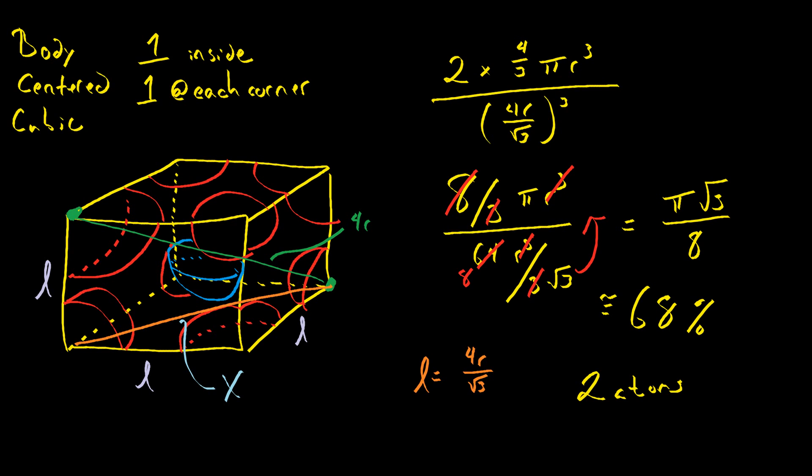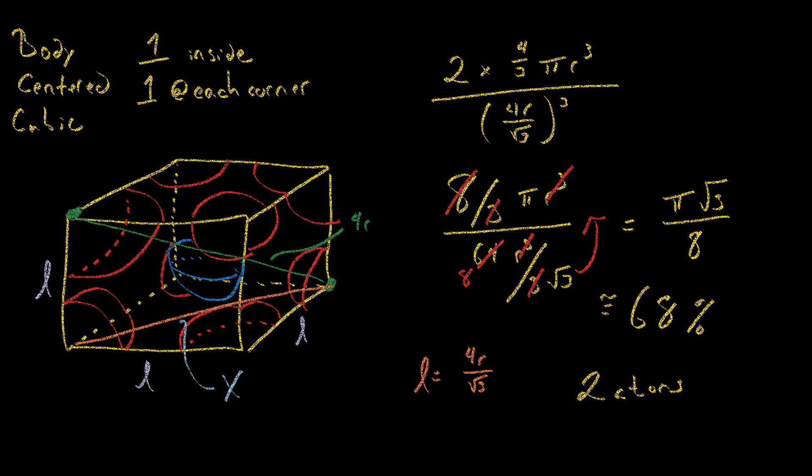Still, we can compare body-centered cubic and simple cubic and we see that 52% versus 68%, BCC is a lot more efficient, but it is not yet perfect. So we will now move on to the closest packing - that's face-centered cubic, also known as cubic closest packing, and hexagonal closest packing.